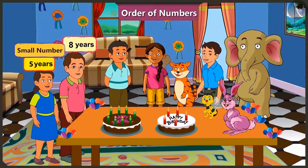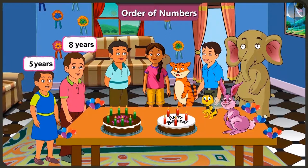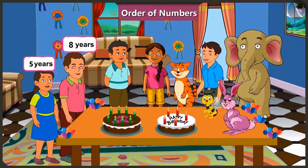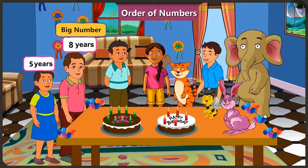Number 5 is smaller than number 8. While counting, we always count from smaller number to bigger number. Counting on this basis, can you tell me which number comes first — 5 or 8? 5 comes first in counting. Absolutely correct. While counting, 5 comes first, then 6, 7, 8. This shows that 8 is a bigger number because it comes after 5.